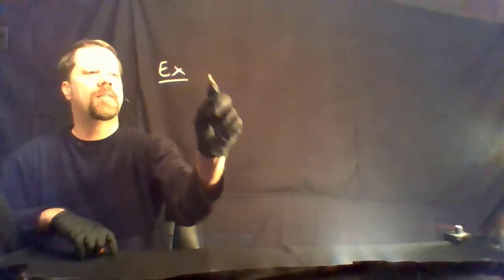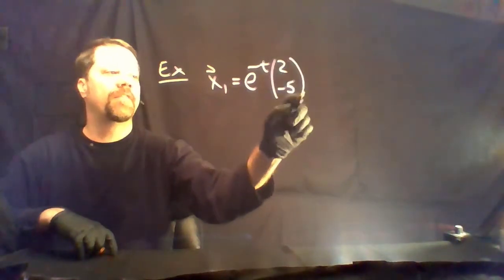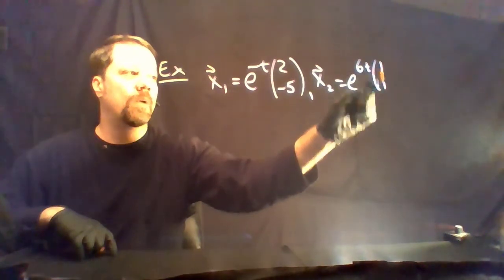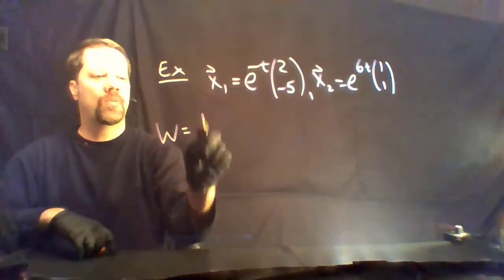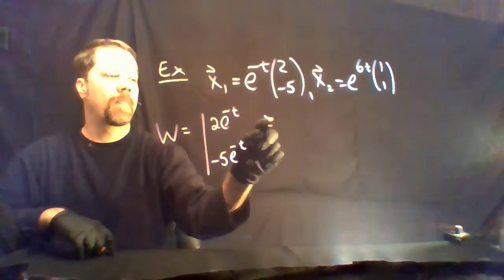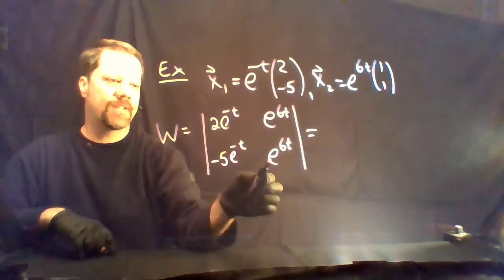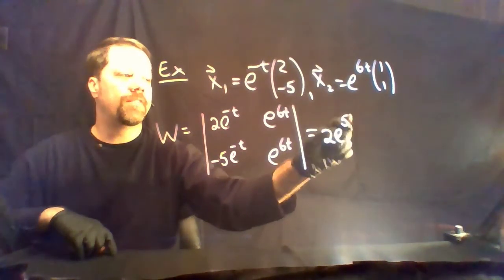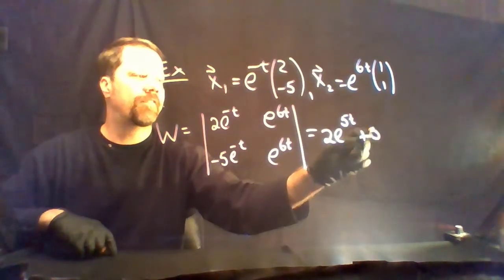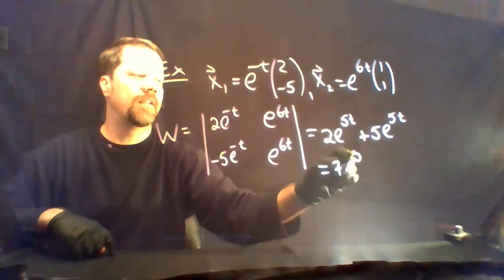For example, with x1 equals e to the minus t times (2,-5) and x2 equals e to the 6t times (1,1), the Wronskian is the determinant of the matrix with columns (2e^(-t), -5e^(-t)) and (e^(6t), e^(6t)). This gives 2e^(5t) minus a negative 5e^(5t), which equals 7e^(5t).